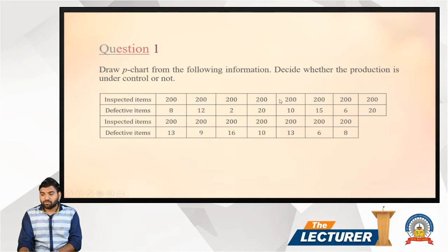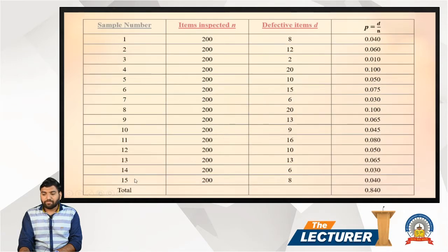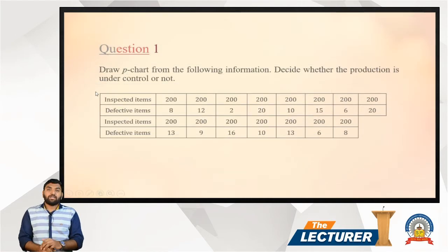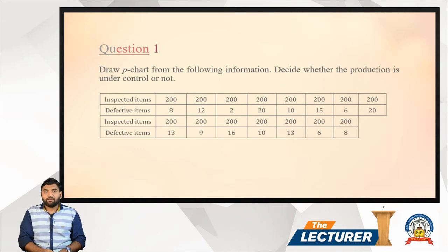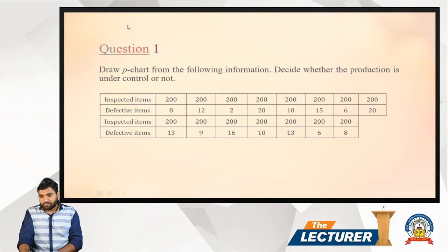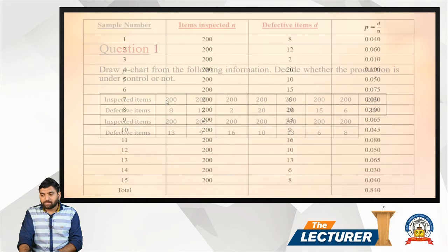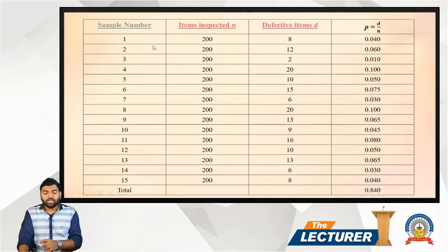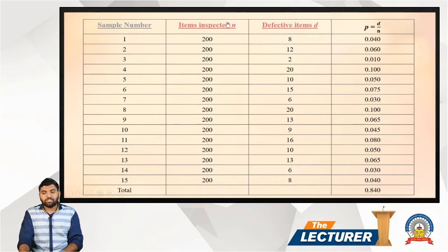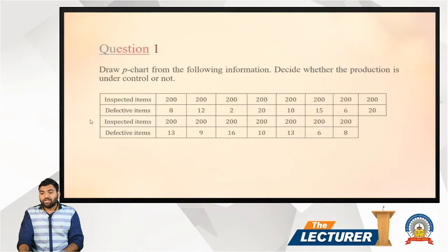We have fifteen different samples. The table has columns: sample number, item inspected, defective items, and p. Each sample has 200 inspected items, which we denote as n. So n equals 200 for all samples.